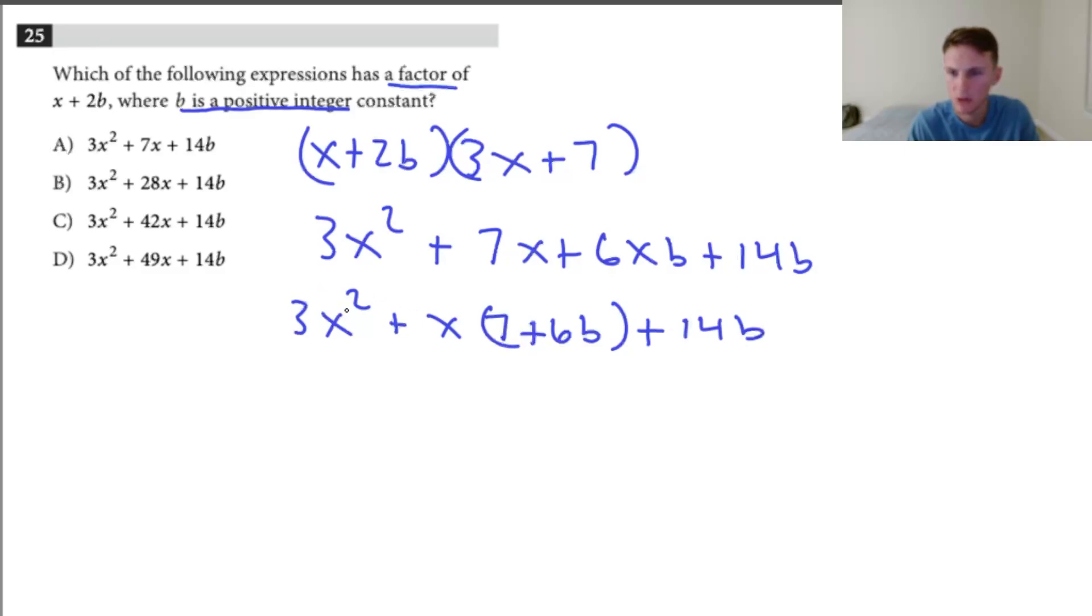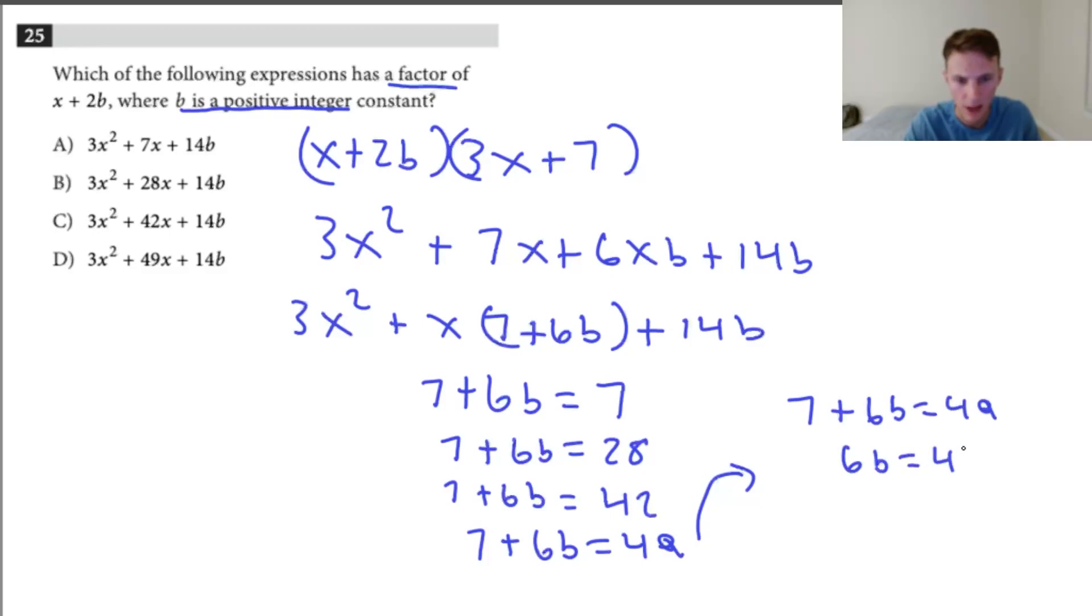So basically, if you see here, we have 3x squared plus x times some number plus 14b. So it's almost in this form. We just have to figure out which of these numbers in the middle lines up with this. So which one has an integer b. So what you have to do basically is set all of them equal to 7 plus 6b. And then you have to figure out when you solve them, which one has the integers. So let me just write that all out. That's going to be all these equations. And I'm going to save you some time. It's basically going to be this one. So if I solve this equation for 49, I'm going to get that b equals 7. So that's the only one that has an integer b. So that is going to be D, our answer.